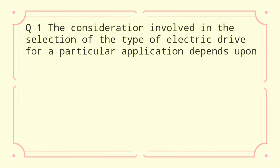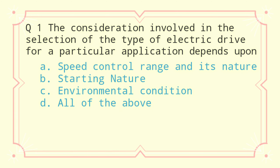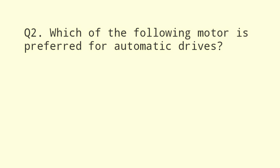Question 1: The consideration involved in the selection of the type of electric drive for a particular application depends upon: a) speed control range and its nature, b) starting nature, c) environmental condition, d) all of the above. The correct answer is all of the above.